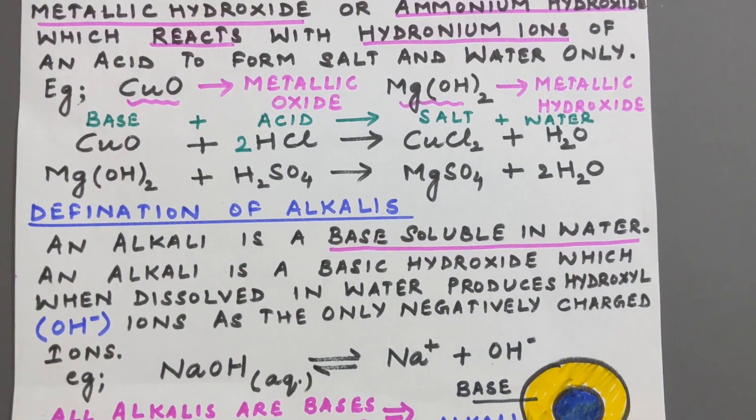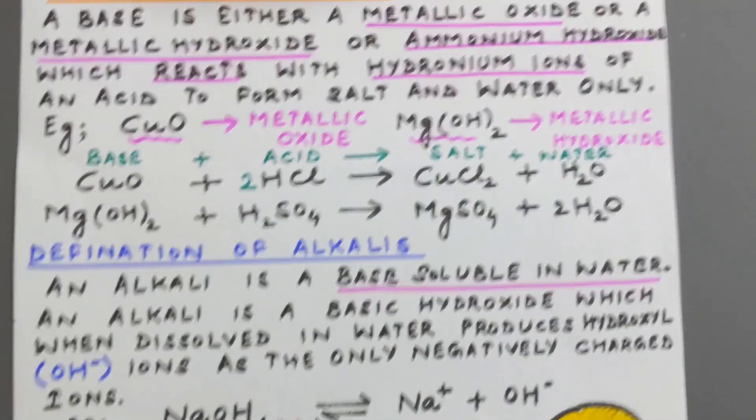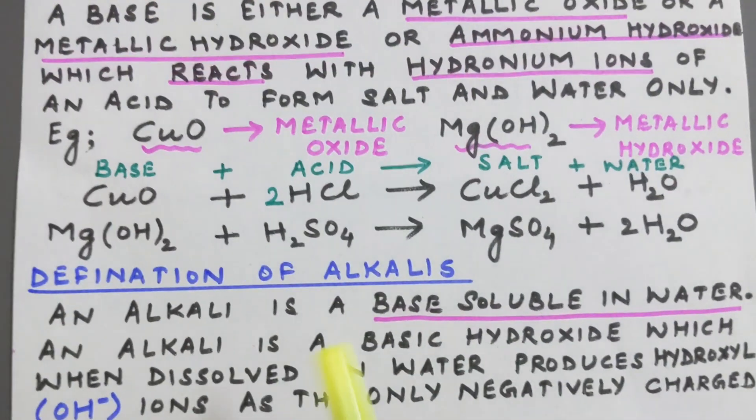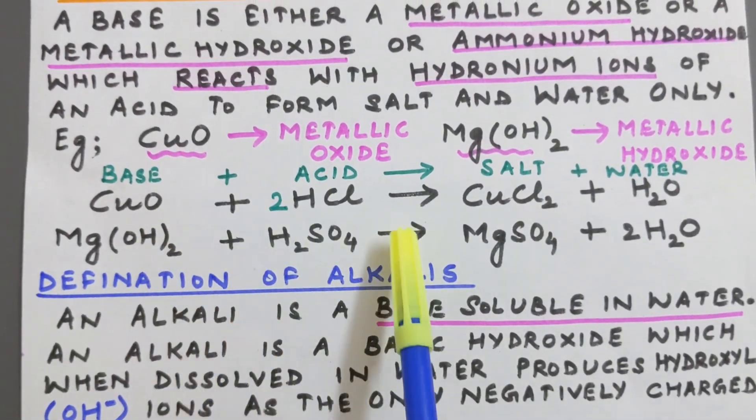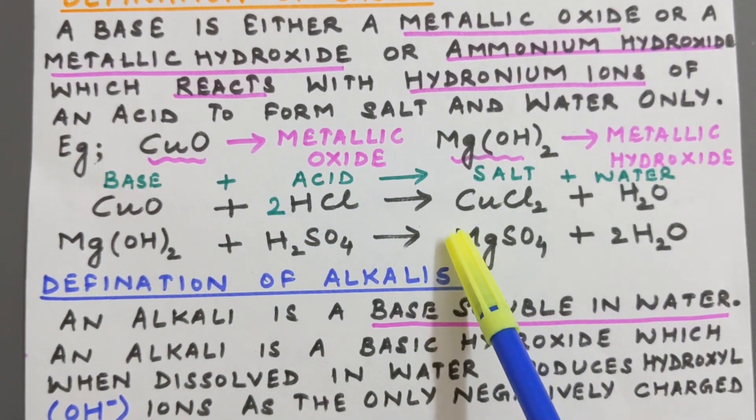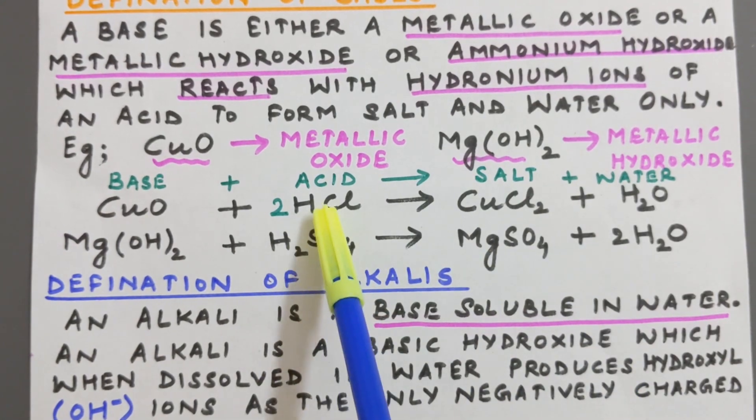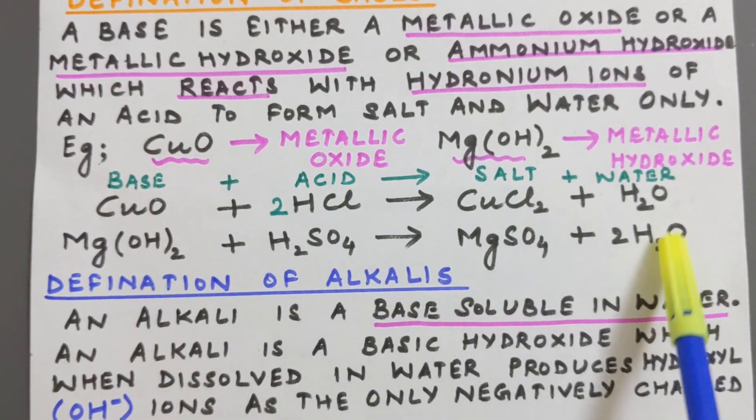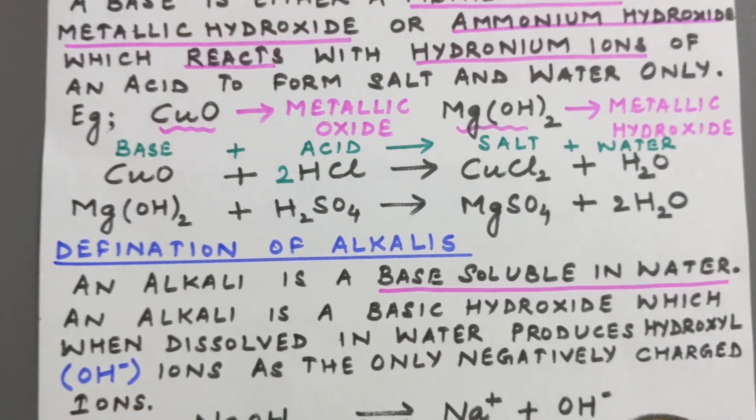Now you can see the salt is CuCl2. Copper oxide CuO is basically combining with HCl. So Cu is combining with Cl and forming CuCl2 as per the formula, and hydrogen is combining with oxygen forming H2O that is water.